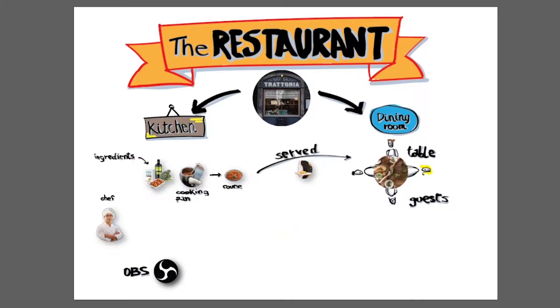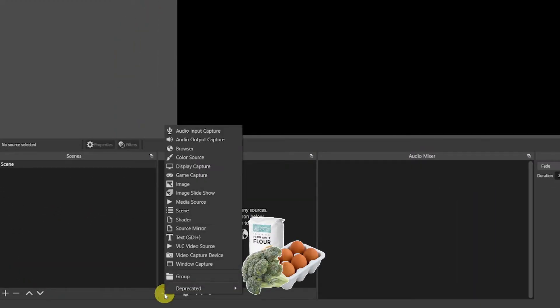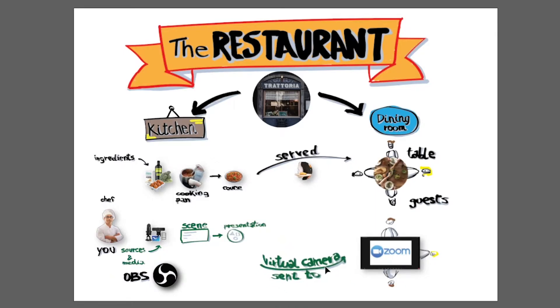In the previous videos I've made a restaurant analogy, where OBS is the kitchen, where you find all the ingredients or all the elements that will constitute the presentation. You, as a chef, are taking those ingredients and putting them into a cooking pan. Assemble them, spice them up until you're ready with the presentation. You'll use the virtual camera as your waiter, that will take the presentation from the kitchen to your video conferencing platform. That is the table where your guests or audience are eating, or in other words consuming your content.